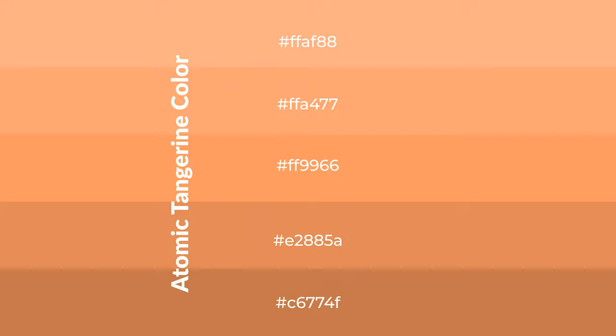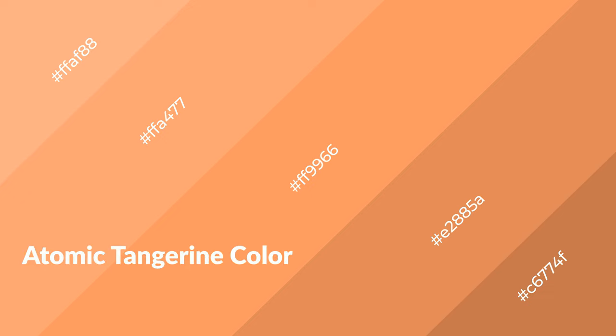To generate shades of a color, we add black to the color, and it is used in patterns, 3D effects, and layers. Shades create depth and drama. Atomic tangerine is a warm color and it emits cozier and active emotions.